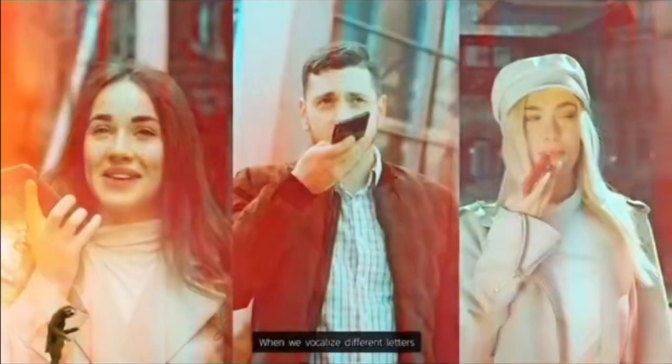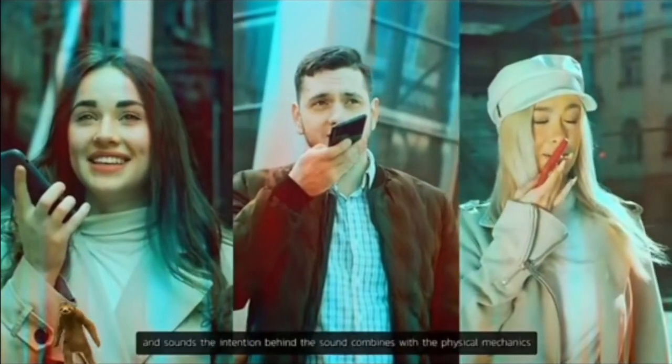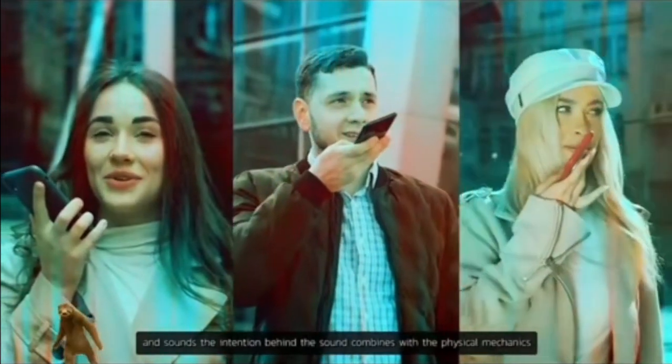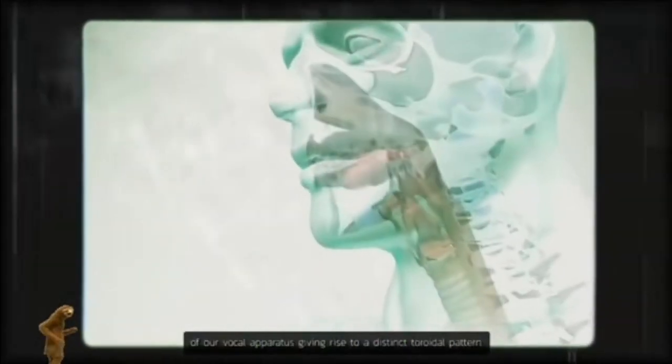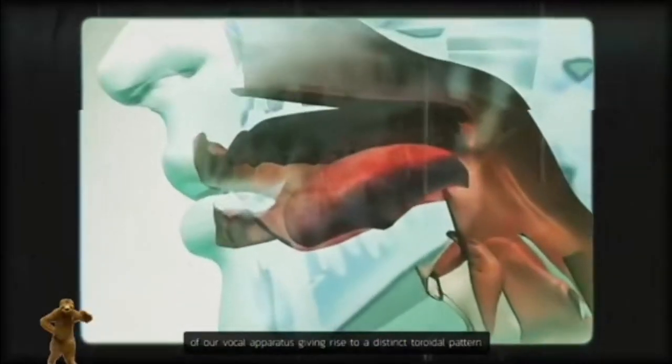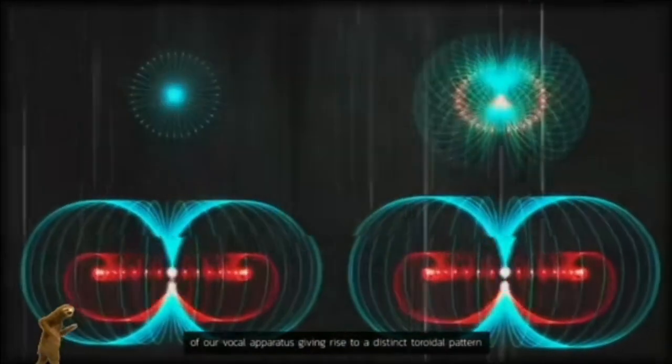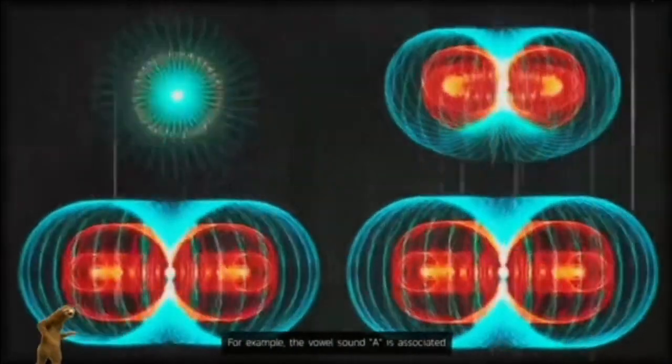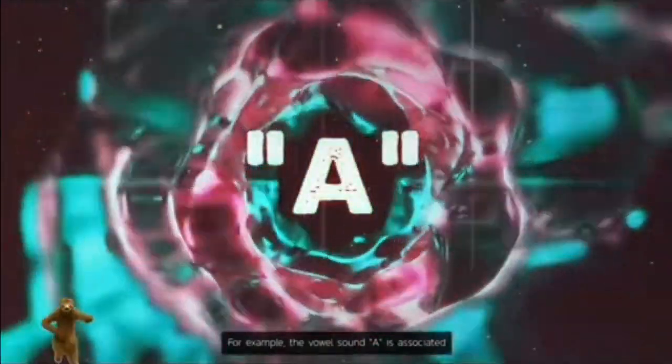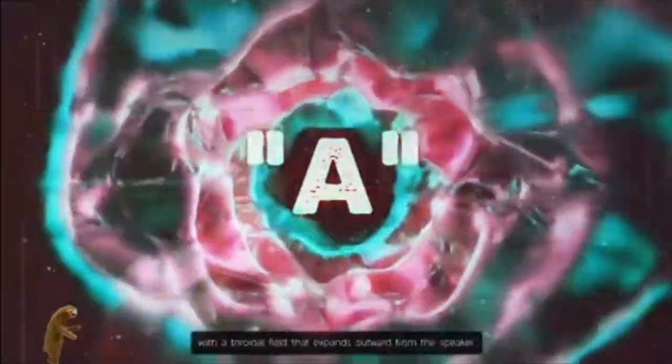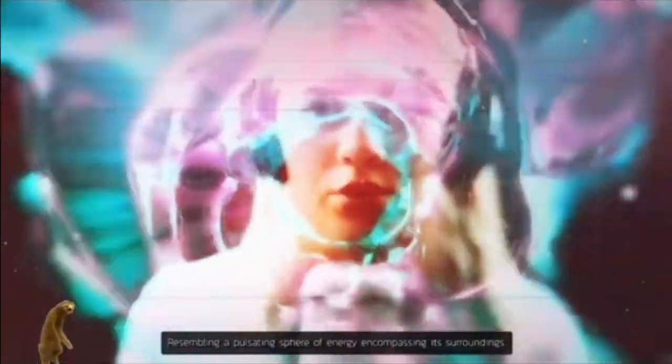When we vocalize different letters and sounds, the intention behind the sound combines with the physical mechanics of our vocal apparatus, giving rise to a distinct toroidal pattern. For example, the vowel sound A is associated with a toroidal field that expands outward from the speaker, resembling a pulsating sphere of energy encompassing its surroundings.